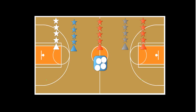On the signal, the first player attempts a shot at one of the three basketball hoops. I have one hoop here in my gym, another one that's a little smaller for other students with an adjusted height, and then another one over here — so three basketball hoops in all.